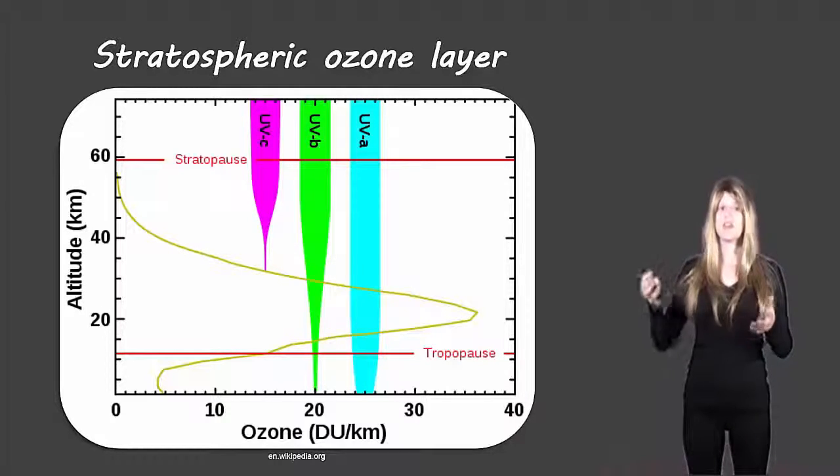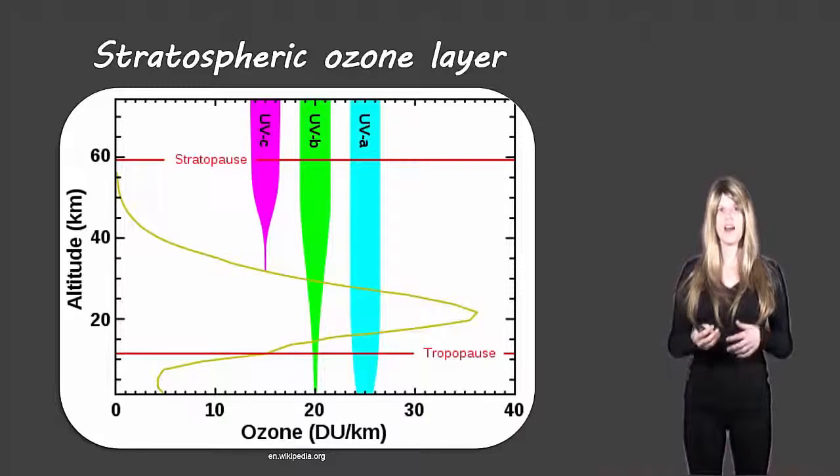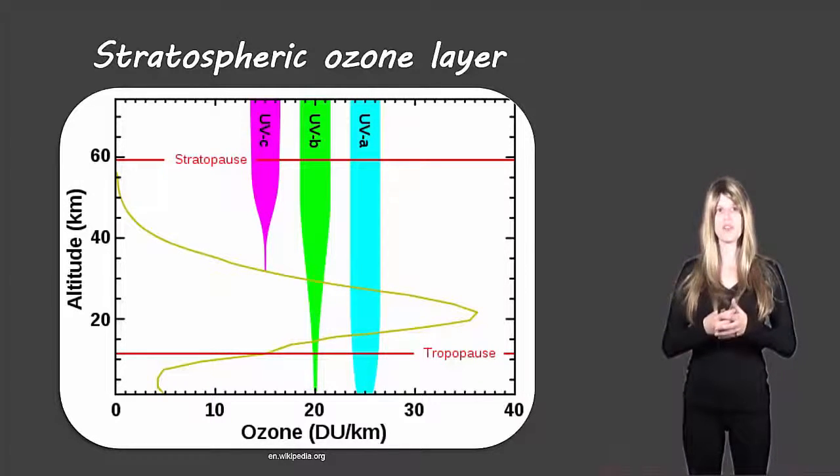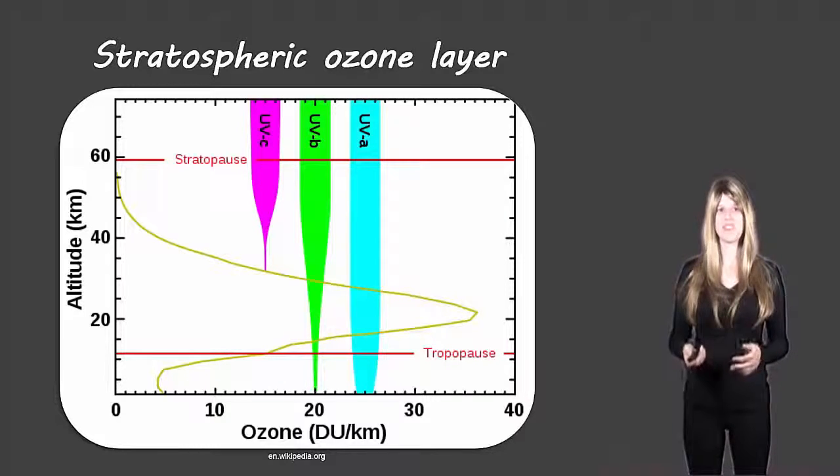So all of this UV light would normally be coming down to earth and we know that ultraviolet light can cause all sorts of problems for humans, it can cause cancer, it can also cause problems for other species not just humans and so it's good that the ozone layer is protecting us from these negative effects.